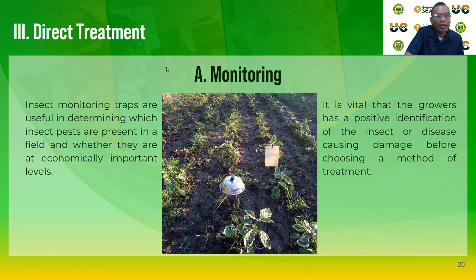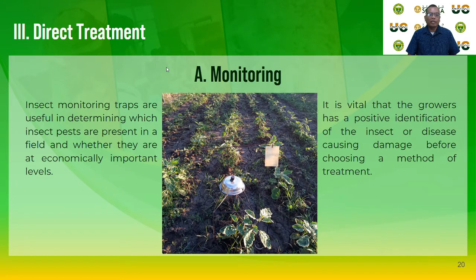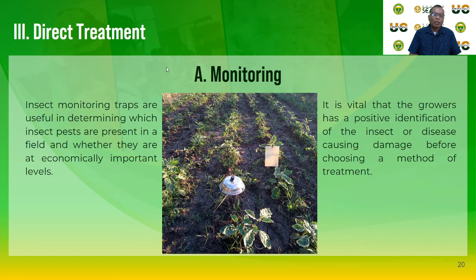The last technique to reduce pest infestation in organic farming is direct treatments. Monitoring is very important: insect monitoring traps are useful in determining which insect pests are present in the field and whether they are at economically important levels. Placing a light trap in the production area can efficiently determine what types of insects are present. It is vital that growers positively identify the insect or disease causing damage before choosing a method of treatment.